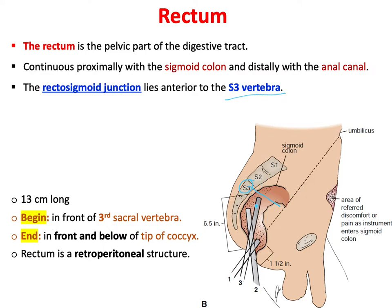The rectum starts at the level of the third sacral vertebra (S3) and ends just in front of, and about one inch below, the tip of the coccyx. So it begins at S3 and ends one inch below and anterior to the tip of the coccyx.